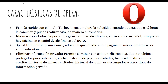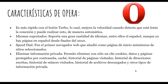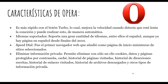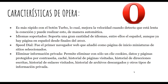Características de Opera. Es más rápido con el botón turbo, lo cual mejora la velocidad cuando detecta que está lenta la conexión y puede realizar esto de manera automática. Soporta una gran cantidad de idiomas, entre ellos el español, aunque ya hay páginas en español desde finales del 2010. Opera fue el primer navegador web que añadió como página de inicio miniaturas de sitios seleccionados.